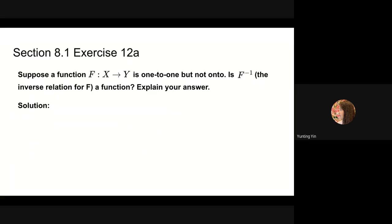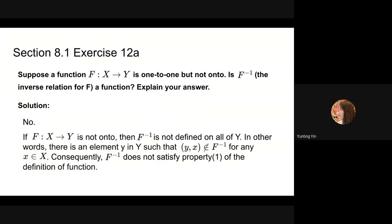Next, we will do problem 12a. Suppose the function f from x to y is one-to-one but not onto. Is the inverse relation for f a function? The answer is no. Since f is not onto, there must be some element in y not related to any element in x. The first property of the definition of a function states that every element in the domain must be related to some element in the codomain, which is not satisfied here.